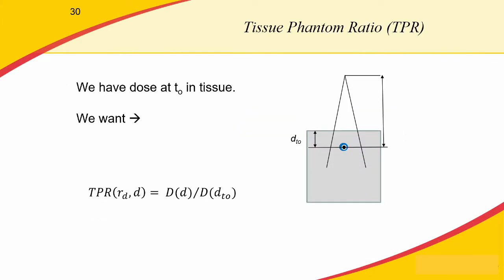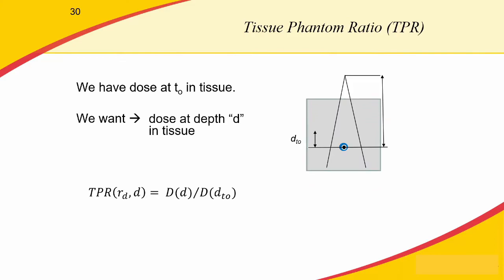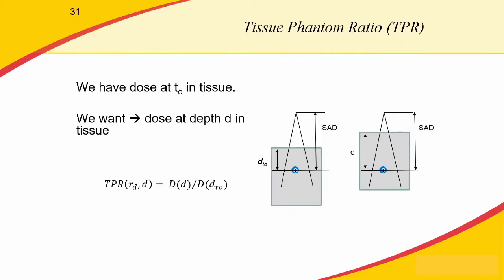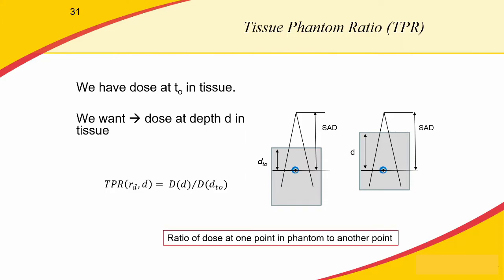Our next dose ratio is the tissue phantom ratio, or TPR. For this ratio, we measure dose at some reference depth T0 in the phantom, then move the phantom to make a measurement at a different depth D. The TPR is simply the dose at depth D divided by the dose at our original reference depth T0. In both cases we remain at the same SAD, so the measurement point is always the same distance from the source. The TPR is the ratio of dose at one point in the phantom to the dose at another point in the phantom.